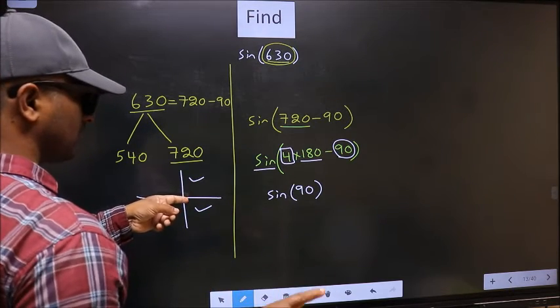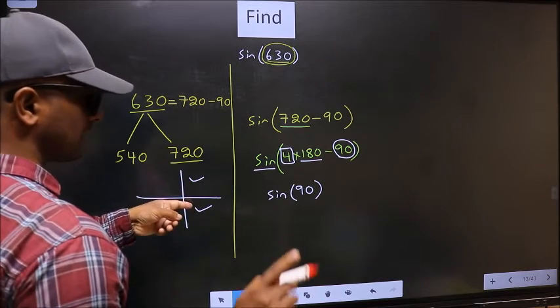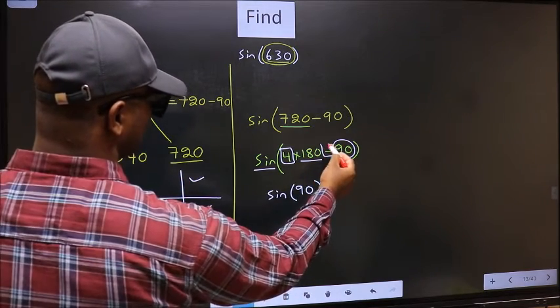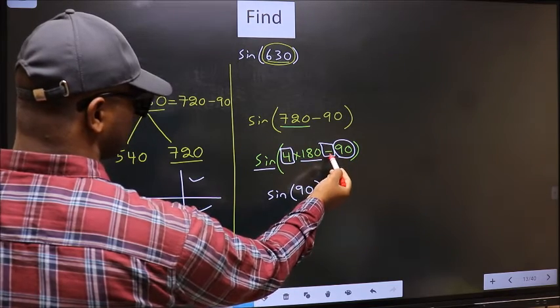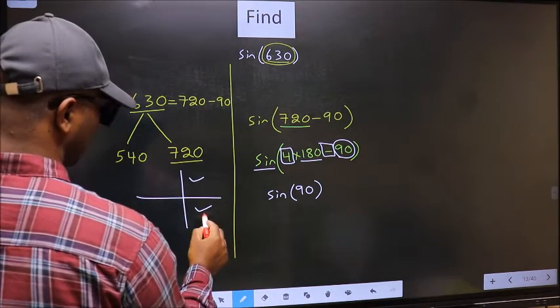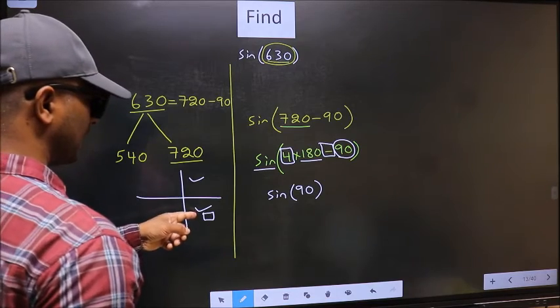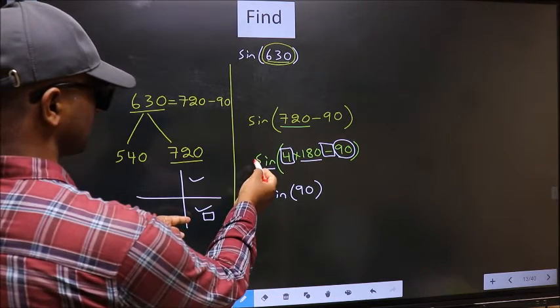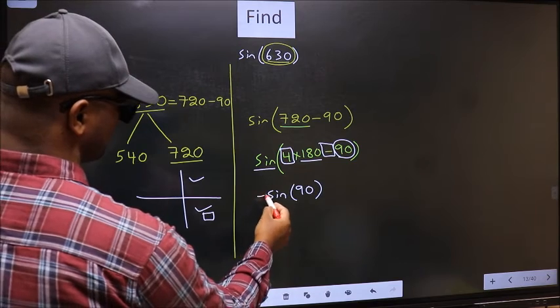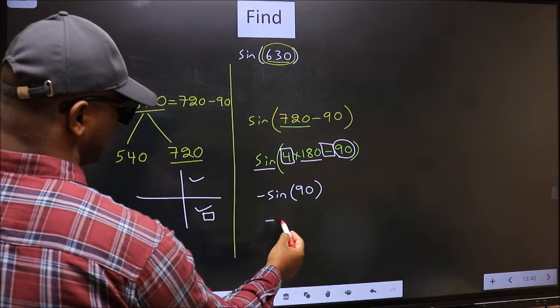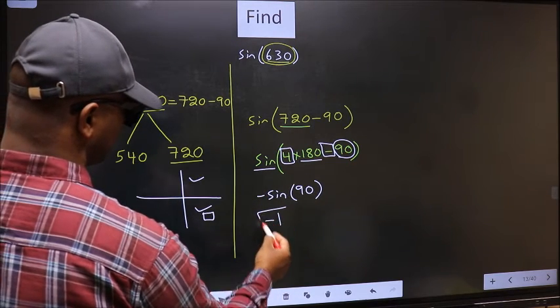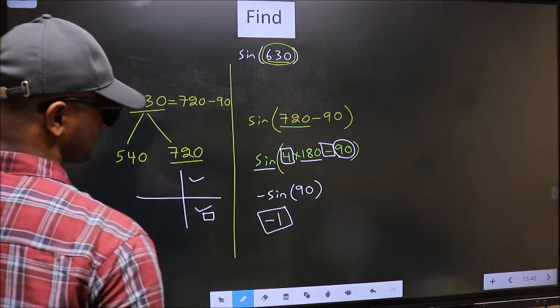So now to select the quadrant, we should look at this symbol. Here we have negative. That means the angle lies in the fourth quadrant. And in the fourth quadrant, sine is negative. So we should put negative. So negative sine 90 only is 1. This is our answer.